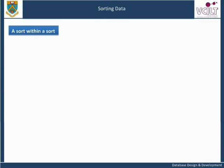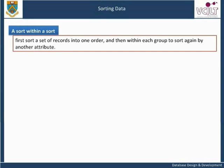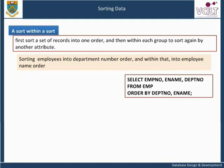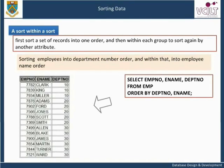A sort within a sort. It is very easy to specify a sort within a sort — that is, to first sort a set of records into one order and then, within each group, to sort again by another attribute. For example, the following query will sort employees into department number order and within that, into employee name order: SELECT employee number, employee name, department number FROM employee ORDER BY department number, employee name. As can be seen, the records have been sorted into order of department number first, and then for each department number, the records have been sorted alphabetically by employee name.